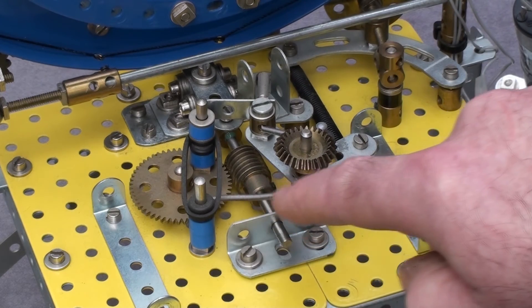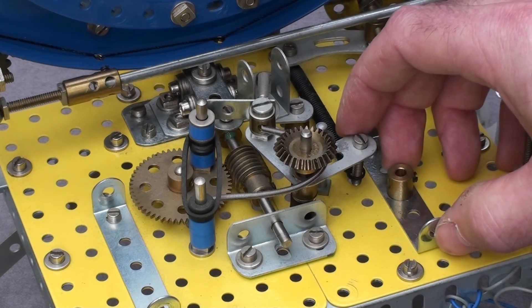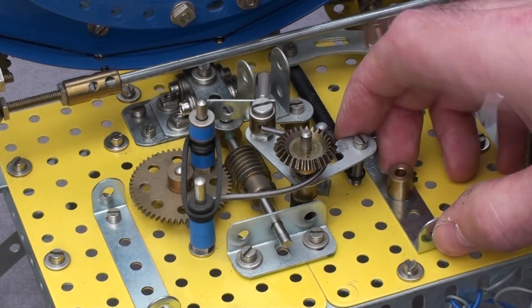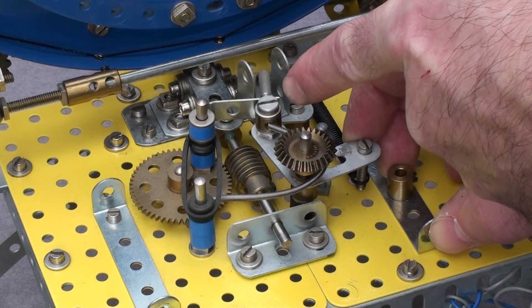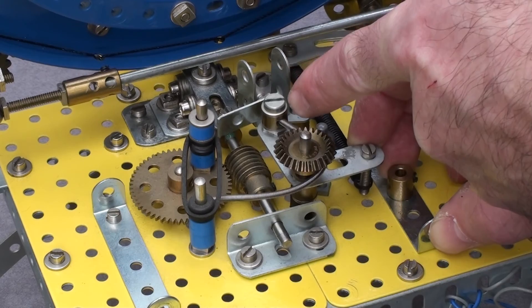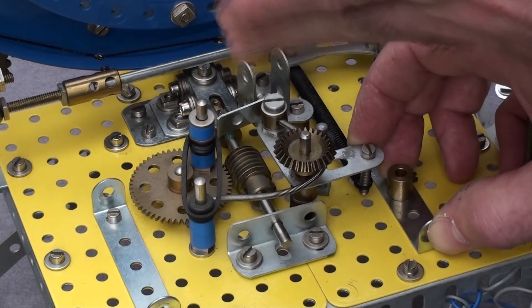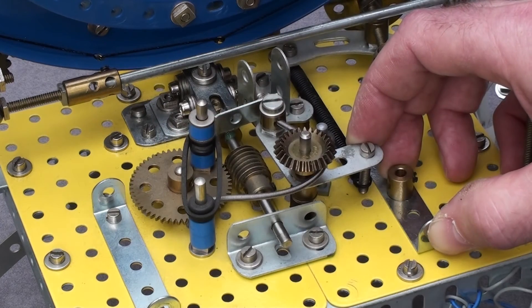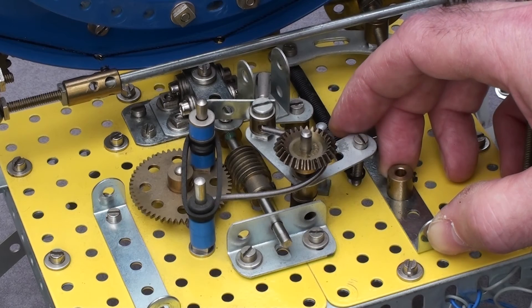You need this spring just for the release of this little lever. You can see it tends to go that direction, and the lever gets in front of this small pawl.